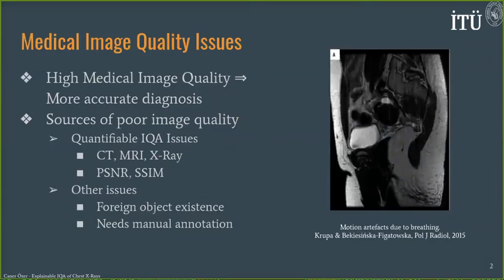To begin with, I would like to mention some brief information about medical image quality issues. We would like to ensure high quality during a medical test so that clinicians can assess the image more accurately in terms of diagnosis and come up with adequate treatment. However, we cannot always have a high quality image at the time of acquisition. This may be caused by image artifacts in CT, MRI, and X-ray imaging modalities, as you see in the example on the right, and can be evaluated by quantitative metrics such as SNR and SSIM.